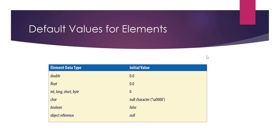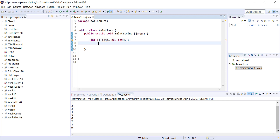Since we haven't assigned values yet, Java assigns default values: doubles and floats get 0.0, integers/long/short/byte get 0, chars get the null character (Unicode 0000), booleans get false, and object references get null. For our integer array, every element defaults to 0.